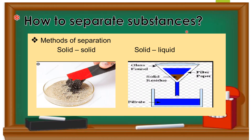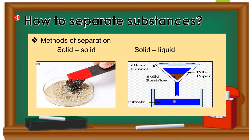There are two commonly used methods to separate substances: solid-to-solid separation and solid-to-liquid separation. For example, iron filings mixed with sand can be separated using a magnet. For solid-by-liquid separation, we use filter paper to separate solid particles from liquid particles. We'll discuss these in more detail.